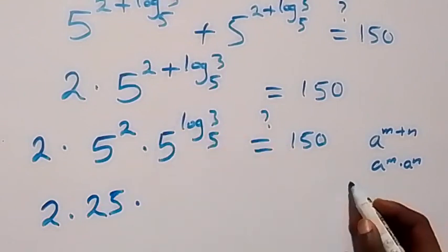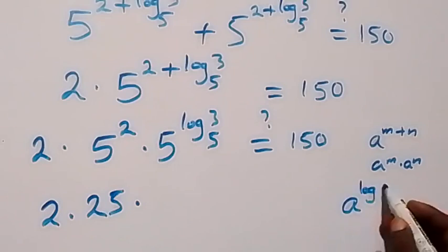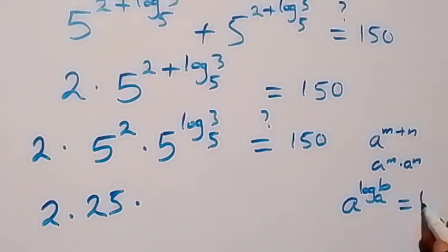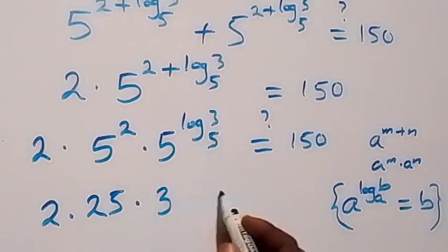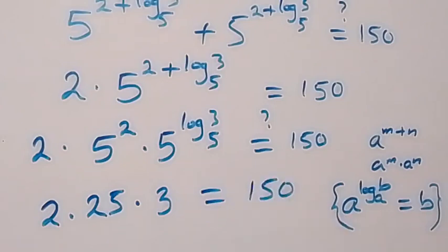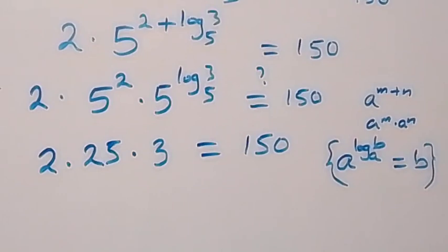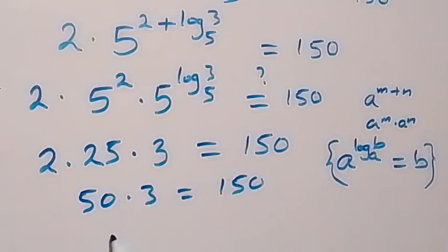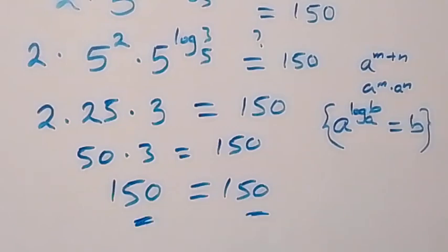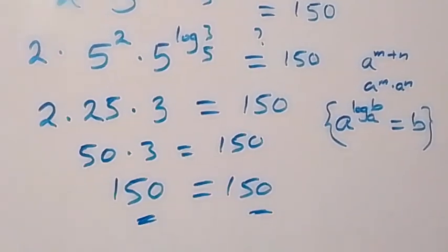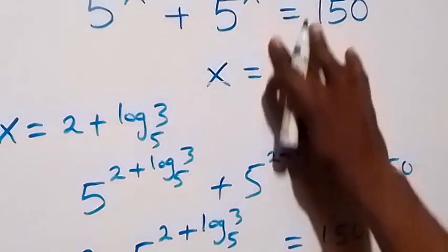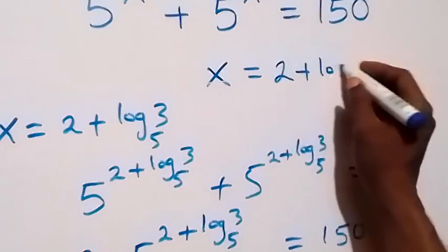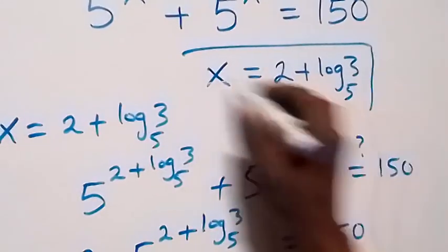What we have here follows from the rule: a raised to power log B base A equals B. So from here, 5 raised to power log 3 base 5 is simply 3. Then we have 2 times 25 times 3 equals 150, that is 50 times 3 equals 150, which is 150 equals 150. The left hand side equals the right hand side, and hence we conclude that the solution is x equals to 2 plus log 3 base 5.